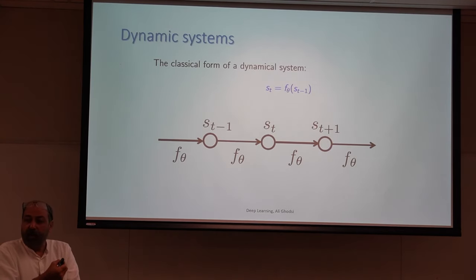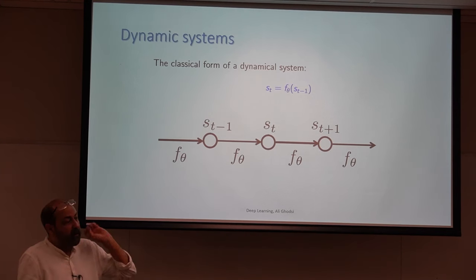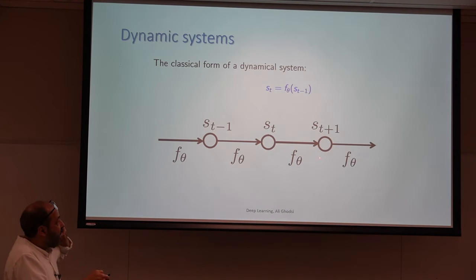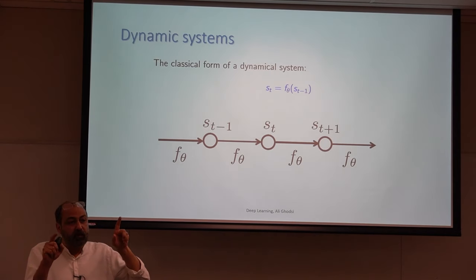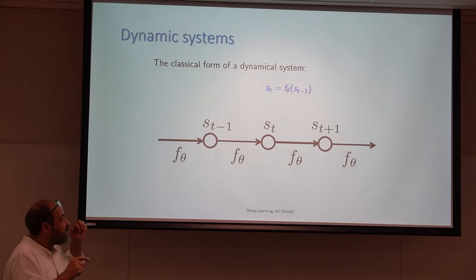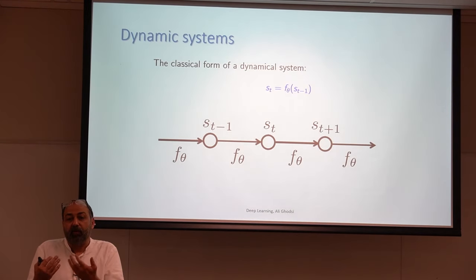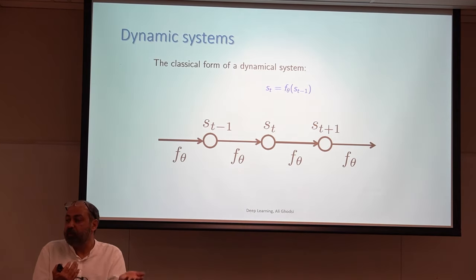RNN is just an extension of dynamic systems that has been around for a long time. The idea of dynamic systems is that you have some states and there is a function which governs the current state based on the previous state. If this function changes over time, you can't learn — it's the difference between stationary and non-stationary dynamic systems. So you need to make the restrictive assumption that the property of the network doesn't change over time: going from state one to two has the same governing function as going from two to three.